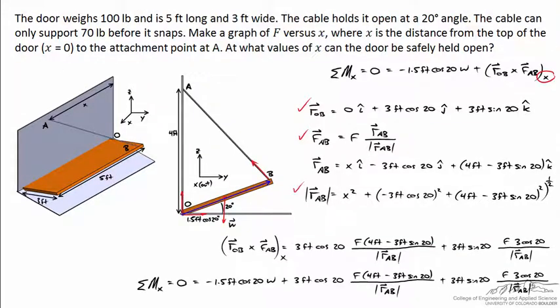So here's a final expression for my sum of moments which equals 0. Again we've got a clockwise moment due to the weight of the door. The weight we know is 100 pounds for the door.